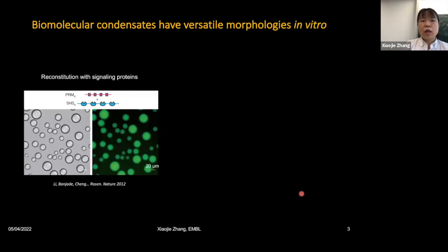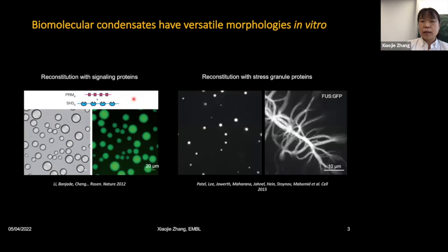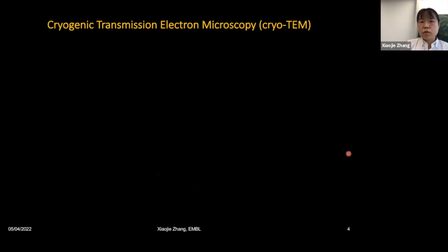What was striking at the beginning of this field was that people found that simply by using a purified key component of biomolecular condensates in an in vitro system, they could reconstitute droplet structures recapitulating the behavior of condensates inside cells. These key components typically contain multimodular domains with disordered features. Later, people found that in other types of condensates, in vitro reconstitution also produced amyloid-like fibrils, speculated to represent a disease-related state of these proteins.